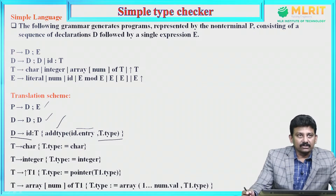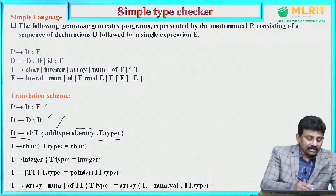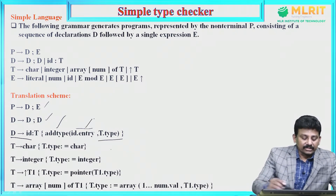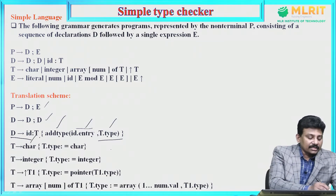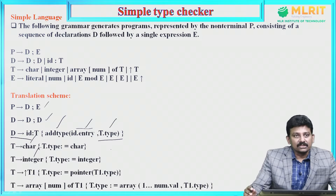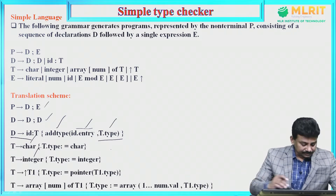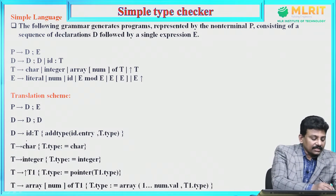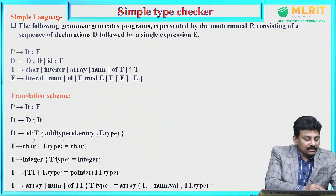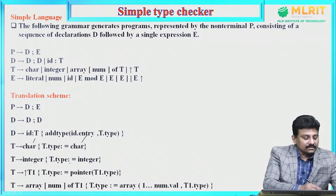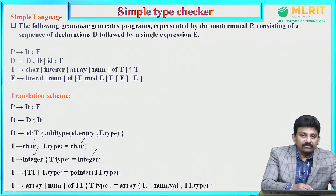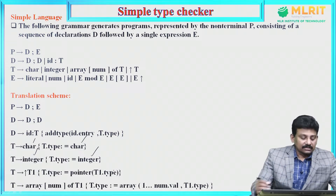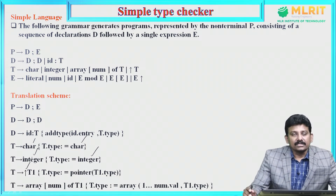By using the add_type function, we can add the type of the variable to the identifier's entry in the symbol table. For each identifier in the symbol table, we add the type of that variable. T derives character — semantic action: T.type = character. T derives integer — T.type = integer. T derives pointer T1 — T.type = pointer(T1.type), meaning this pointer points to objects of type T1.